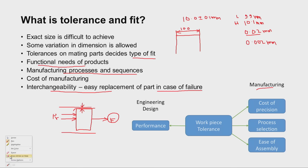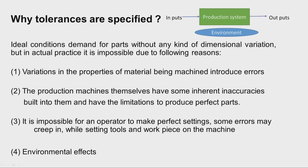Now we will see why tolerances are specified. In a production system, we have various inputs like human resources, machine tools, cutting tools, measuring instruments, and raw materials. Ideal conditions demand parts without any dimensional variation, but in actual practice this is impossible. Variations occur due to properties of the material being machined — for example, metallurgical properties may vary from one place to another in the raw material, and some areas may be very soft.